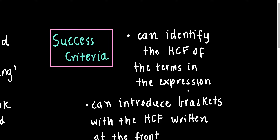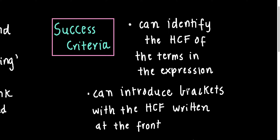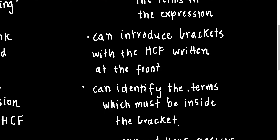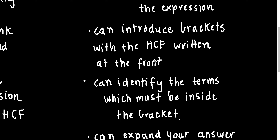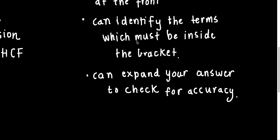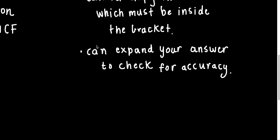How do you know that you're on the right track? Well, first of all, if you can identify the highest common factor of some terms in an expression, you're halfway there. The other thing is that you'll be including brackets in your answer, because factorizing is going to introduce a bracket. That highest common factor that you identify is going to be written out at the front of your expression. The hardest part is probably identifying the terms inside your bracket. But the best thing about factorizing is you can actually expand your answer to check — multiply the number out the front by the terms inside and verify you get the original expression.